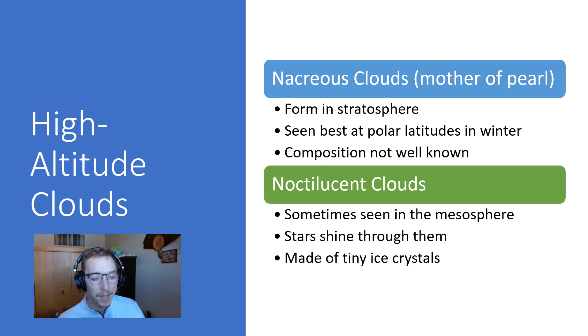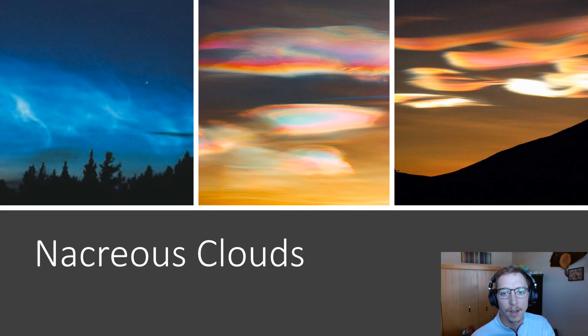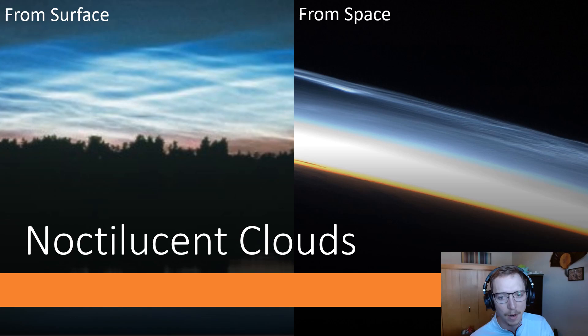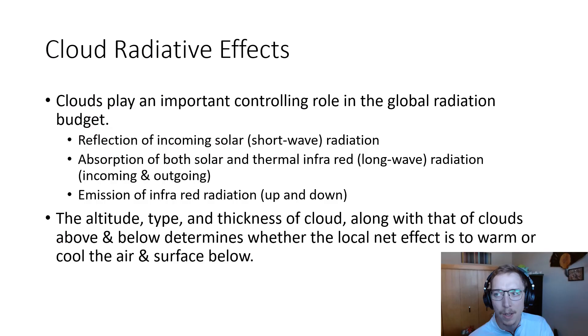Nacreous clouds, or mother-of-pearl clouds, form in the stratosphere and are best seen at the poles — beautiful iridescent colored clouds. Noctilucent clouds are sometimes seen in the mesosphere, stars can shine through them, and they're made of very tiny ice crystals. You can see them from both the surface and from space.